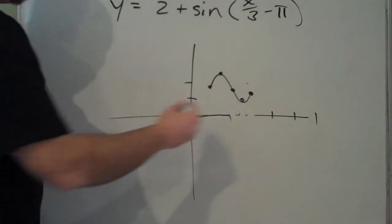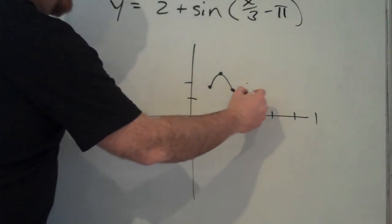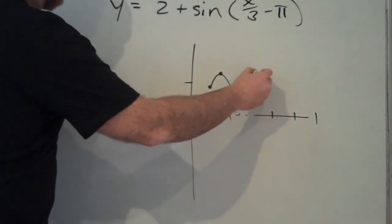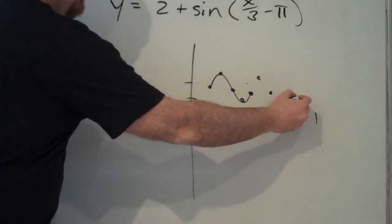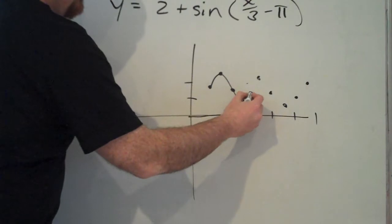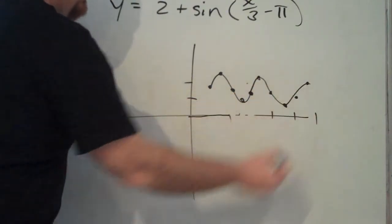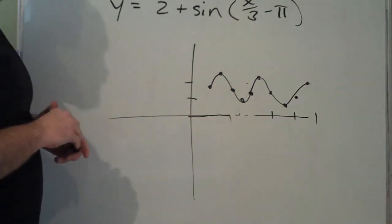Okay? This is the graph, and we can continue this. So we have intercept max, intercept min, intercept max, intercept min, intercept max, so on and so forth. So we have this look to our sine wave. Alright? Now, this is the sine graph.